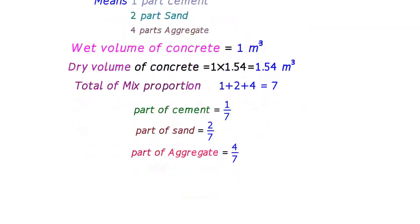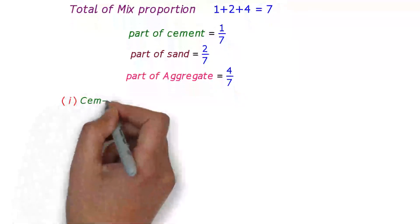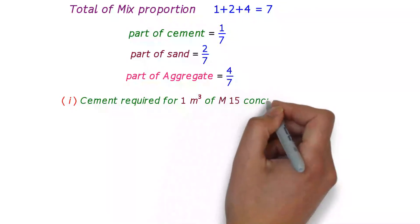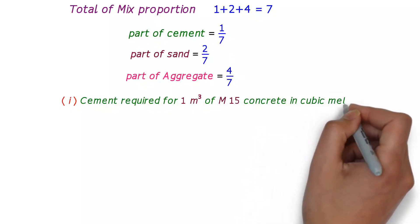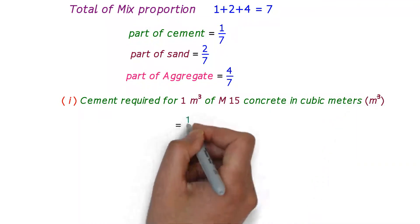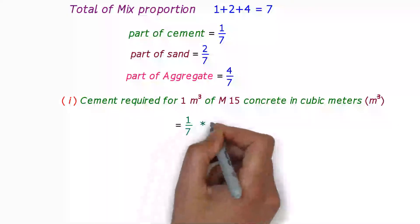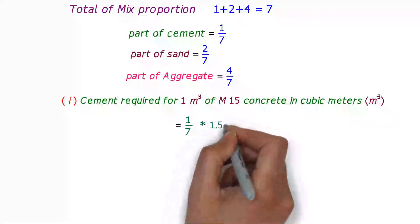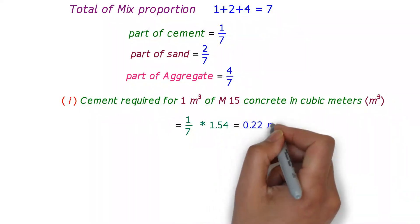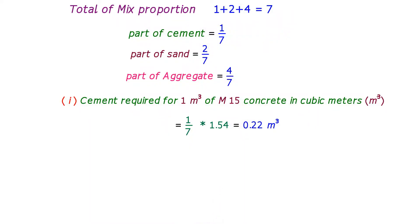The cement required for one cubic meter of M15 concrete is calculated as (1/7) × 1.54, which equals 0.22 cubic meters. The weight of cement is equal to the volume of cement multiplied by the density of cement in kg per cubic meter.